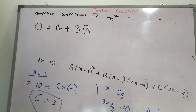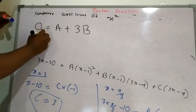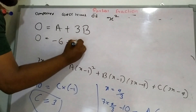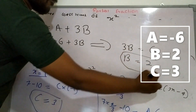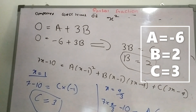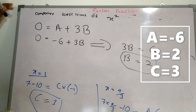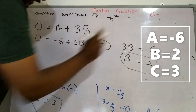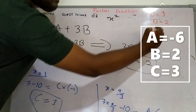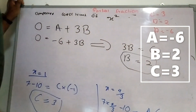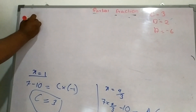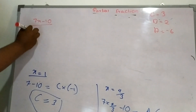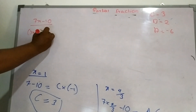Using the previous result where A equals minus 6, I substitute that value. Comparing the x squared coefficients: on the left side the coefficient is 0, and on the right side we get 3b plus a contribution from A, which gives us the value of B.